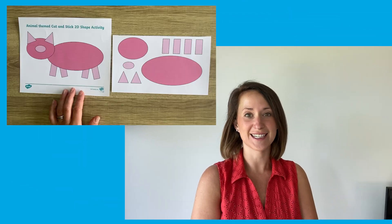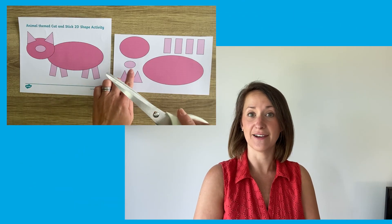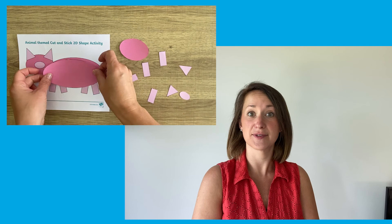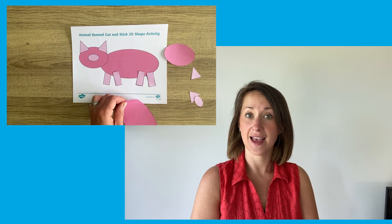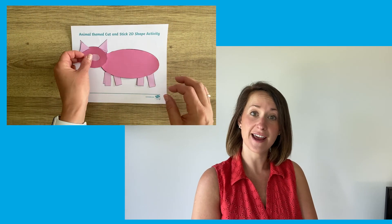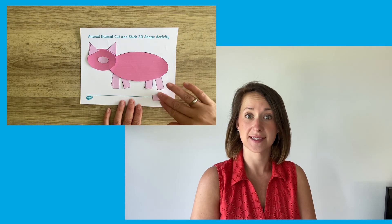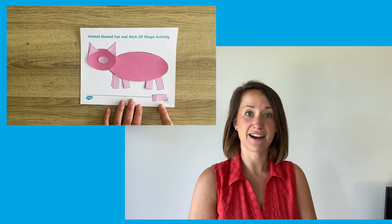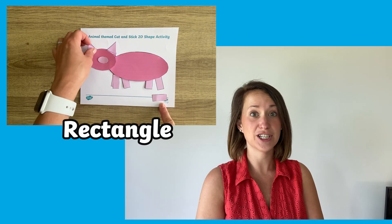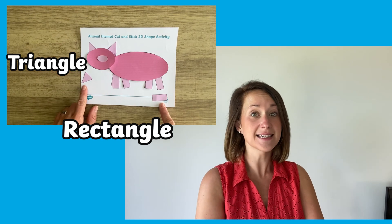Children can practice their cutting skills by cutting out the different shapes for the different animals. They can then try and recreate the animals and name the shapes. It's a really great way of learning the names of 2D shapes and their properties, but in a fun and engaging way.